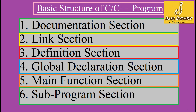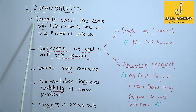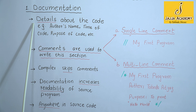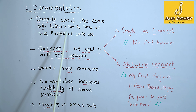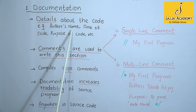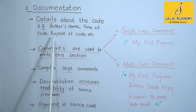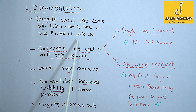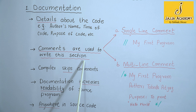Let us start with the documentation section. In this section, a programmer provides details about the code — for example, the author's name, time of code, purpose of code, etc. Comments are used to write this section.